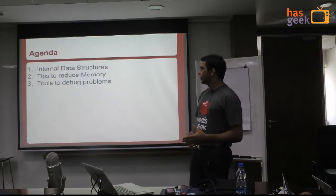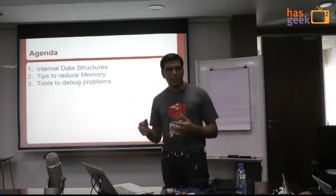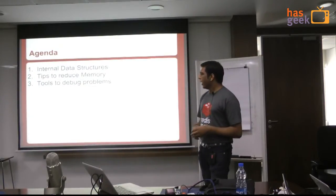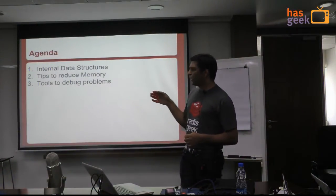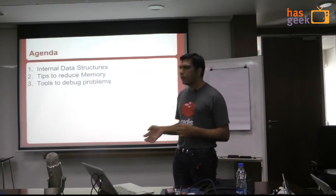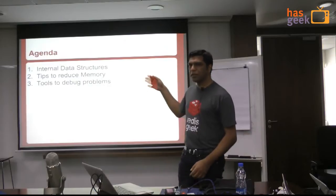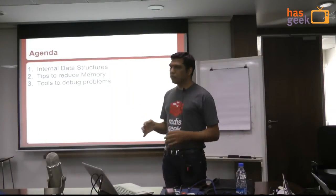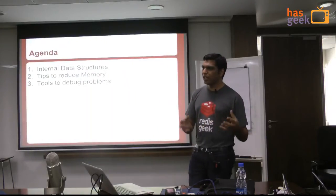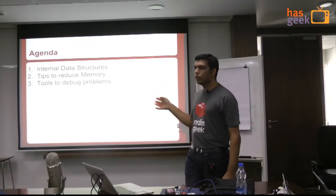I'm trying to structure this talk around three things: internal data structures for Redis, what can you do as a developer to make the best use of memory, and then some tips. And every once in a while you end up in production using a lot of memory and you want to find out which key is causing the problem. So there are some tools which can help you diagnose that.